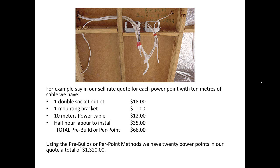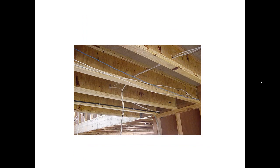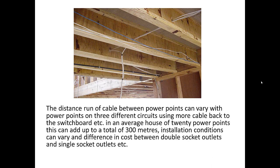Using the pre-bills or per point methods, say we have 20 power points in our quote, giving us a total of $1,320. However, the distance run of cable between power points can vary, with power points on three different circuits using more cable back to the switchboard. In an average house of 20 power points, this can add up to a total of 300 metres in length.